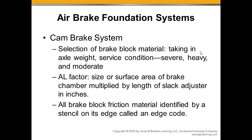The AL factor — area over length — refers to the size of the brake chamber and the length of the slack adjuster. The area of the brake chamber can be 24, 30, or 36 inch, or even smaller. The piston in the brake chamber has air pressure working on that surface area, so the bigger the surface area the more force the brake actuator can apply. The L part of the AL factor is the length of the slack adjuster — the longer the slack adjuster, the more leverage and the more strength it puts into the braking system.